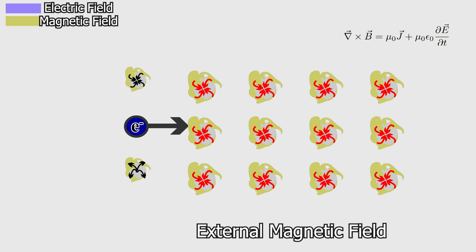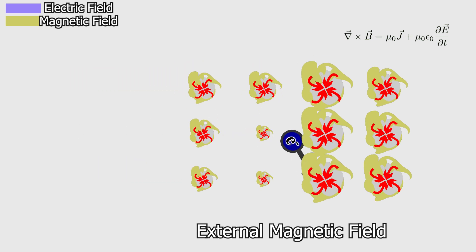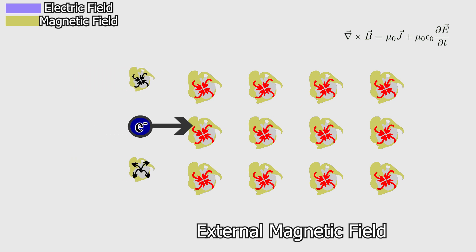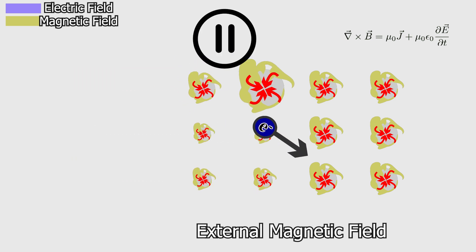If there is an external magnetic field in the environment directed into the plane, the magnetic field generated by the electron interacts with the external field, increasing the total magnetic field's strength on one side and decreasing it on the other. This creates an energy difference in space.